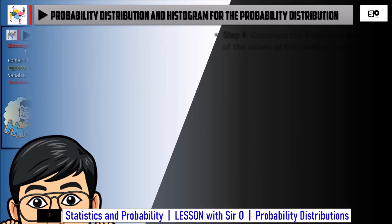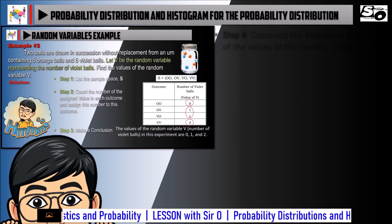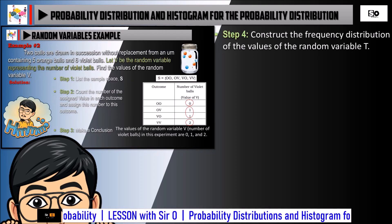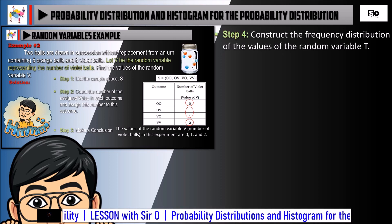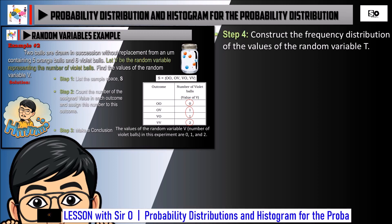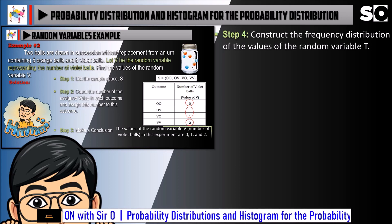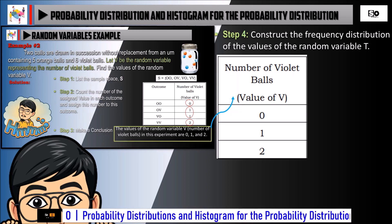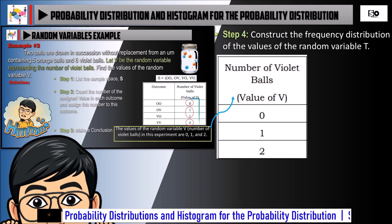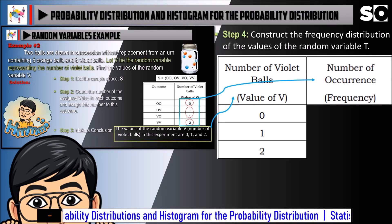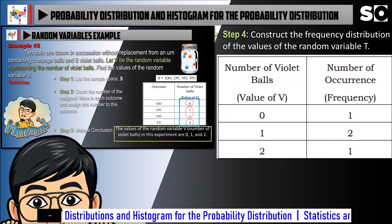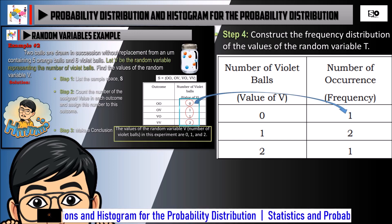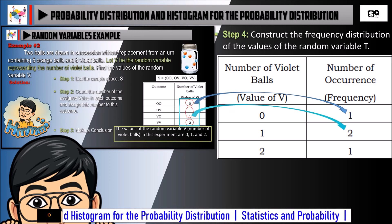Now let us take Example 2 in finding the random variables. Step 4: Construct the Frequency Distribution of the Values of the Random Variable T. First, we will make a table. In the first column, you will put your answer from your conclusion in Step 3. In the second column, you will put the number of occurrence or frequency from Step 2, column 2. Then total all the occurrences or frequencies in the second column.